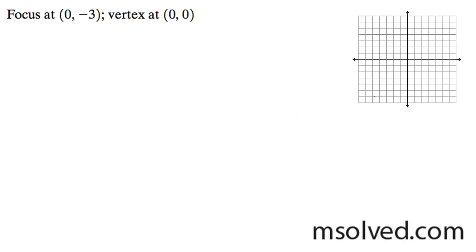So they say the focus is at (0, -3), which is roughly about right here. The vertex is at (0, 0), and it's in the form x squared equals negative, because it's opening down, 4a y.